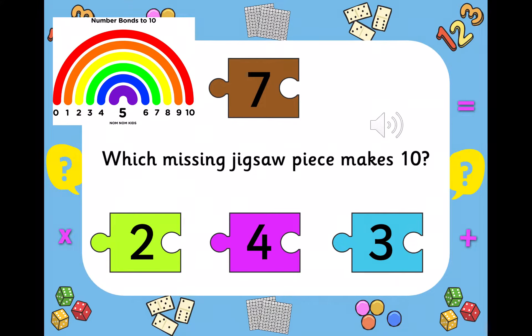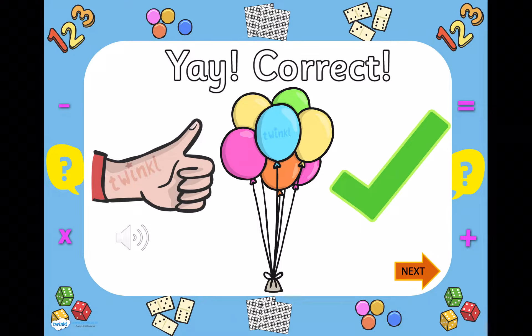Which missing jigsaw piece makes 10? 7 and how many more to make 10? You can count up on your fingers. Fingers are super useful because they've got 10 of them. 7 fingers. 7, 8, 9, 10. Do you think it's going to be 2? No. Do you think it'll be 4? No. I think it's going to be 3.